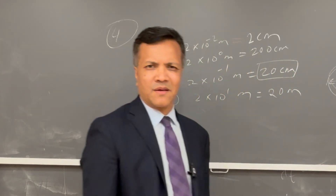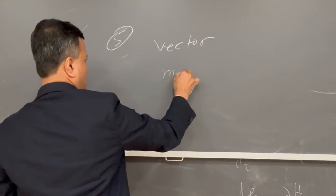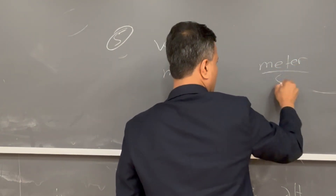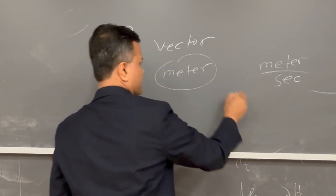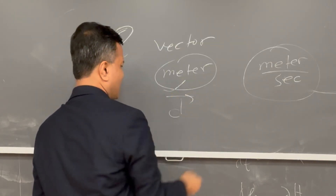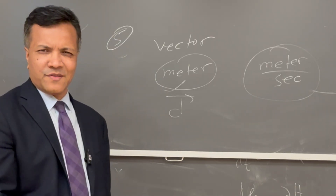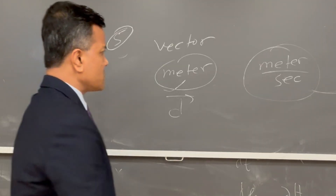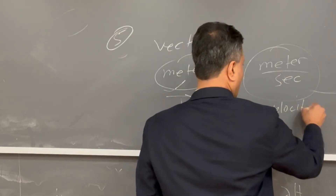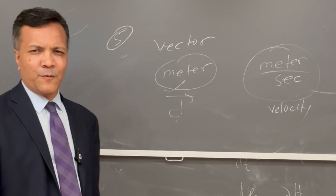Problem five asked what units are used for vector quantities. I gave you many options — one was meters, another was meters per second. Both are correct. Meters can represent displacement, and meters per second can represent velocity. So either of those options could be right.